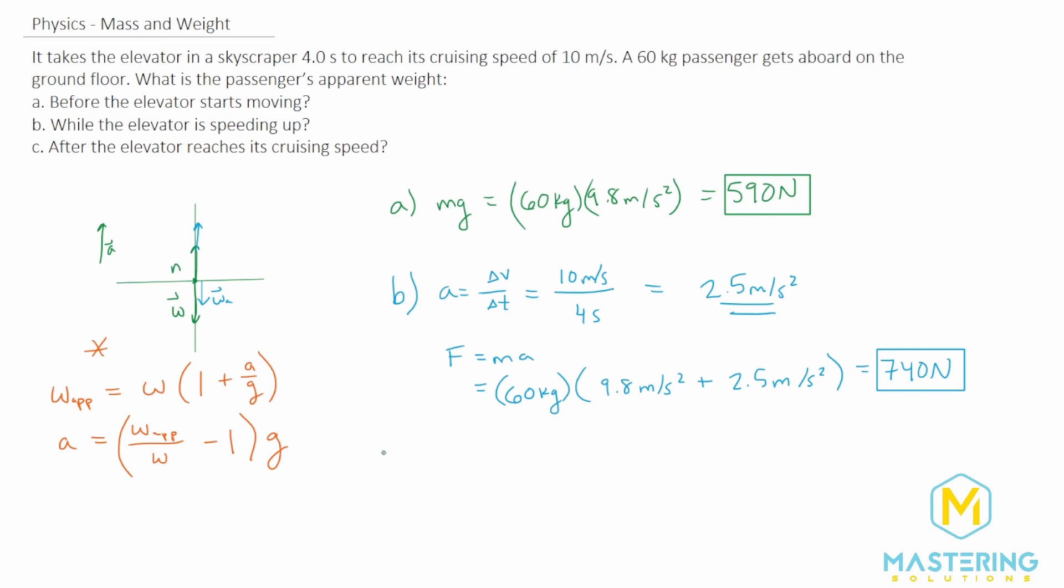And now for the last one, part c, after the elevator reaches its cruising speed, that means acceleration now is zero. It's not speeding up or slowing down. So the apparent weight will again just be mg because the elevator is not pushing up or slowing down on the person at all. Their weight is the only thing that they're feeling, which will again be the 590 newtons.